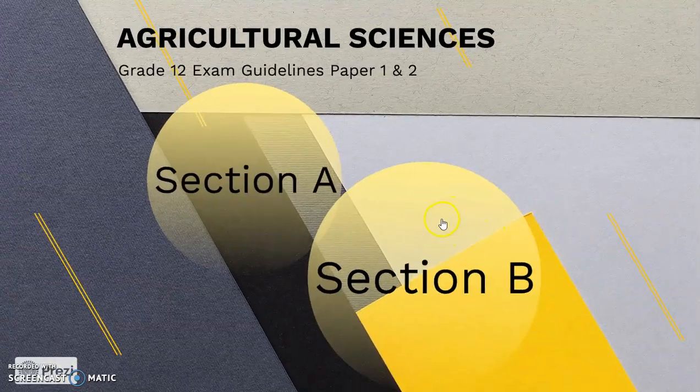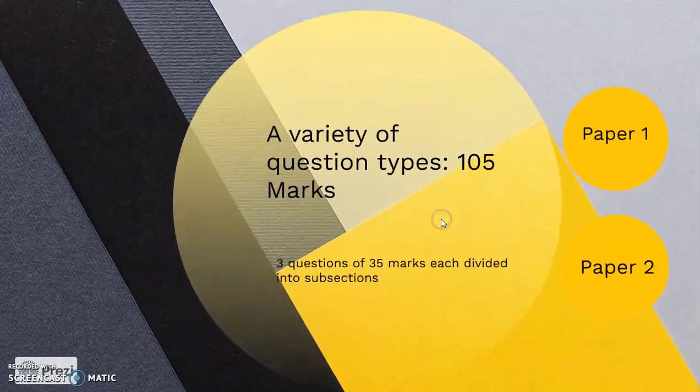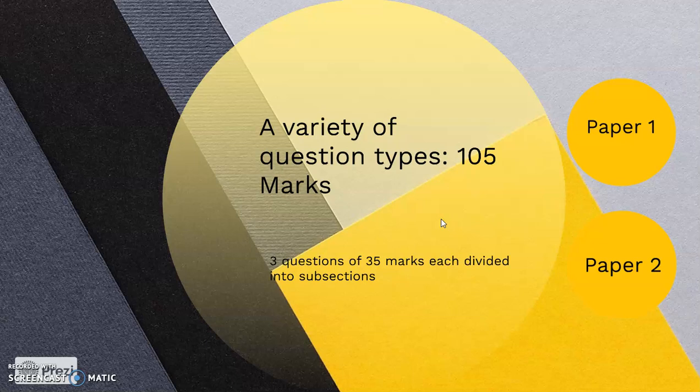Looking into Section B now — Section B is out of 105 marks. Section A is just 45 marks, with multiple choice being about 20 marks and the other questions about 25 marks. Section B has three questions, each worth 35 marks.